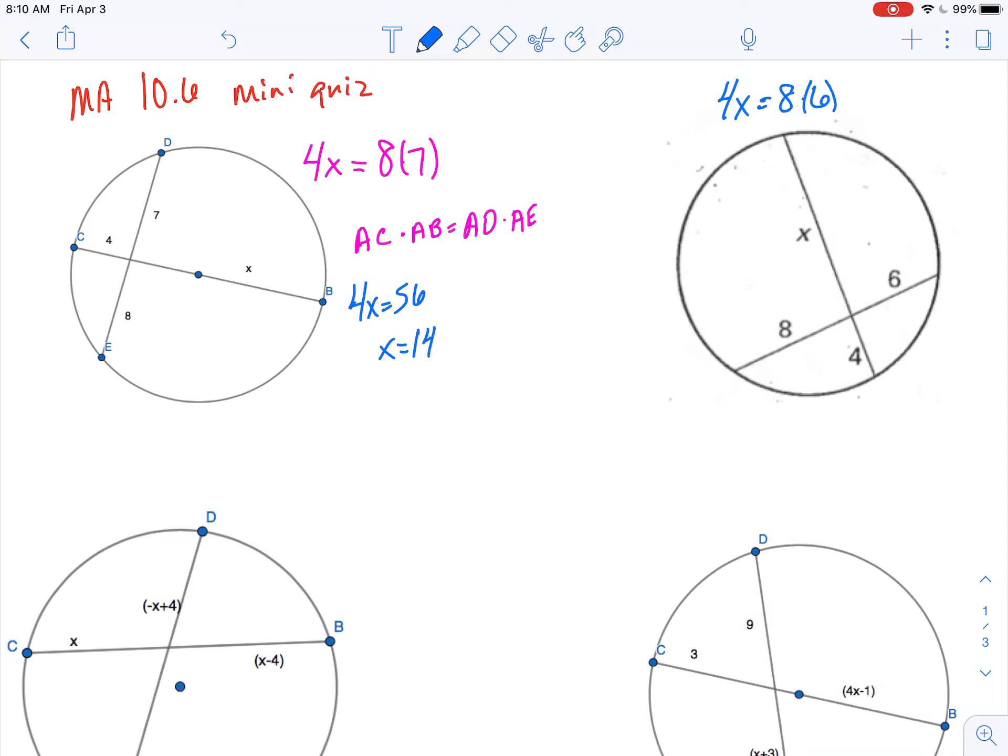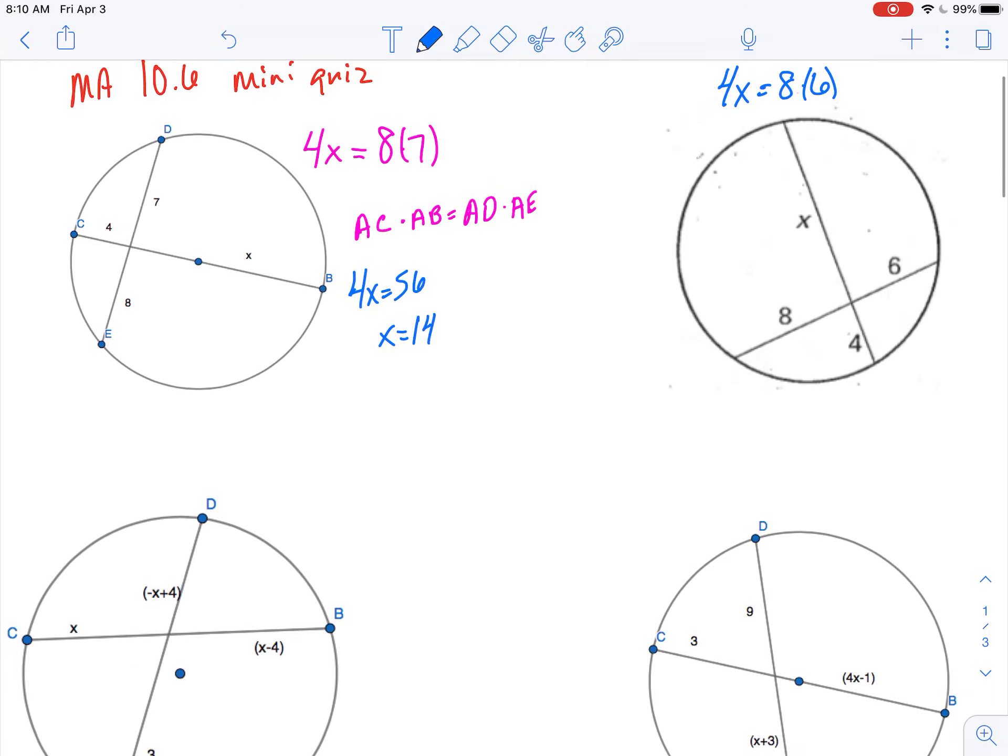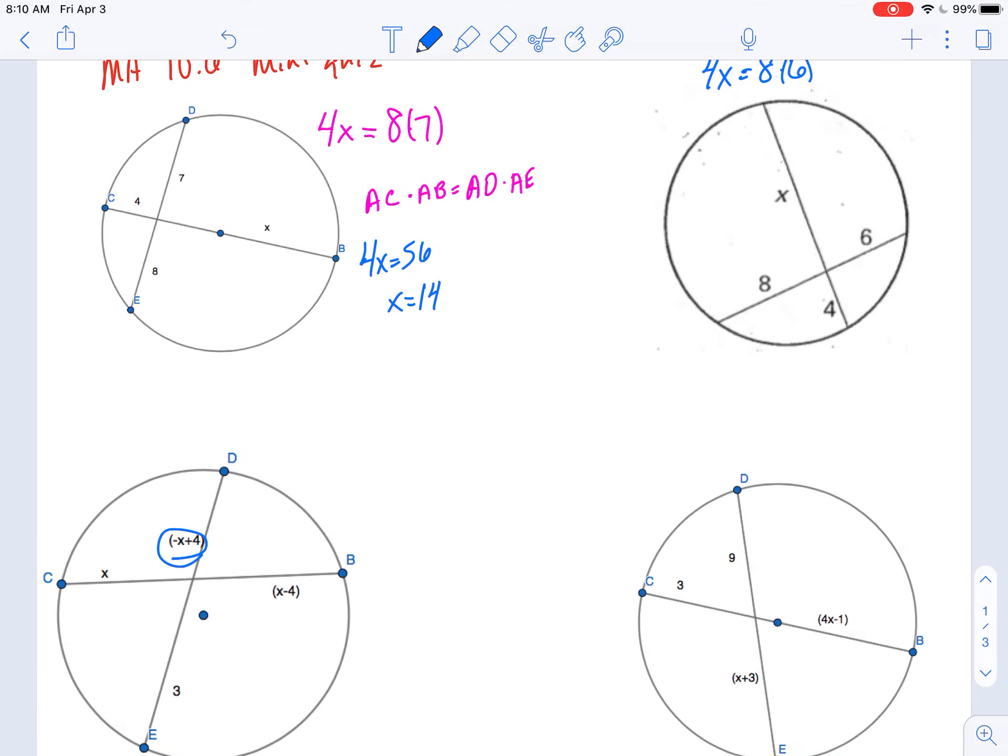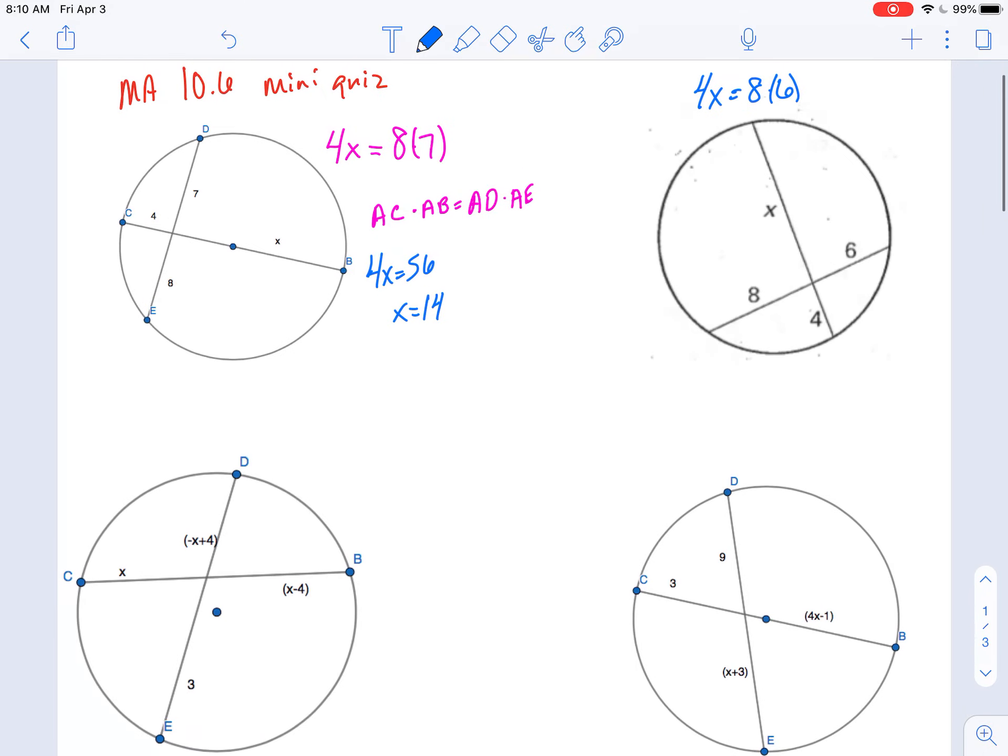And we'd do the same thing here. We'd have 4 times x, those are on the same chord, equals 8 times 6. And we could solve for x.